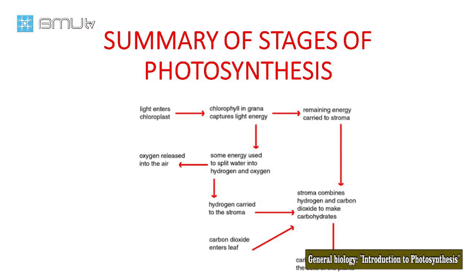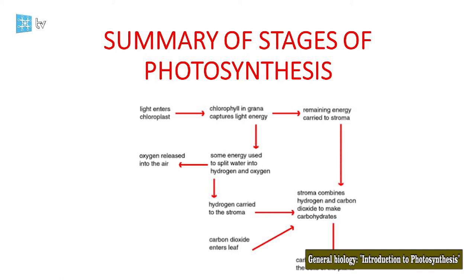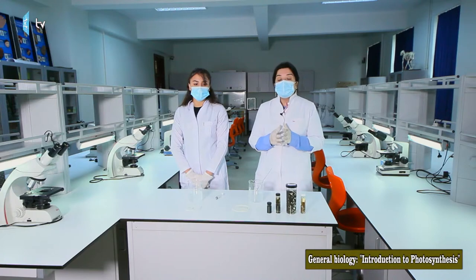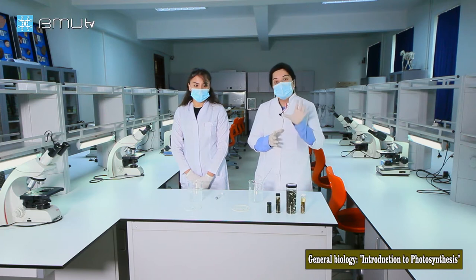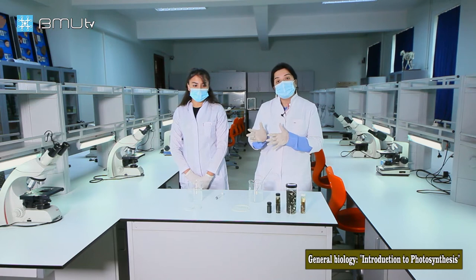Glycerate-3-phosphate molecules use NADPH and ATP molecules to form triose phosphate — an important product of the Calvin cycle. NADPH donates hydrogen ions to glycerate-3-phosphate, and by this way they form triose phosphate molecules.